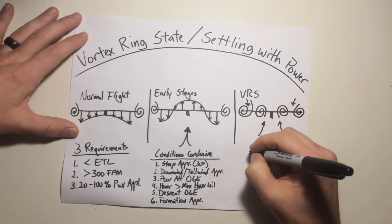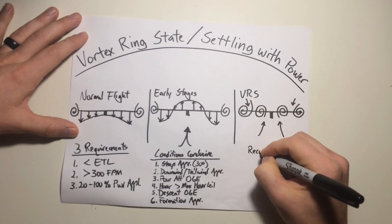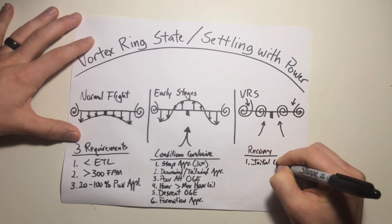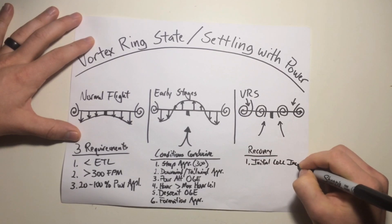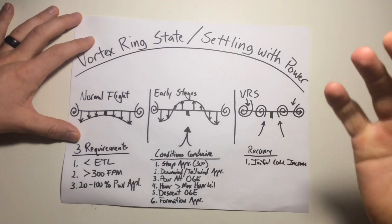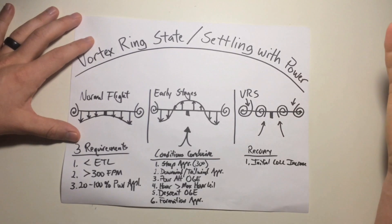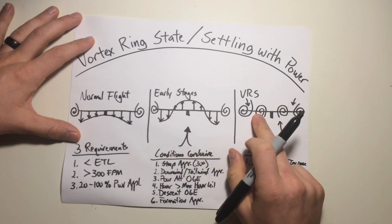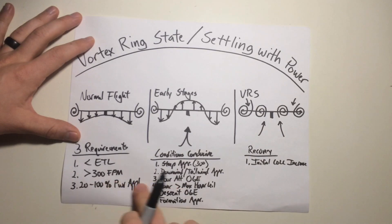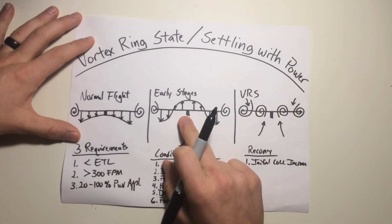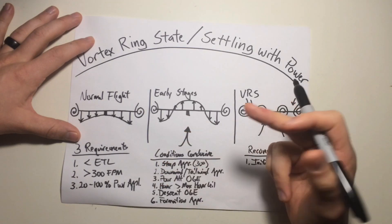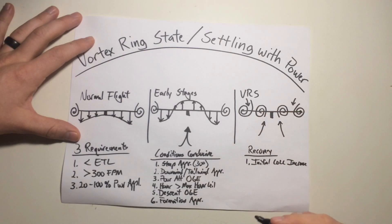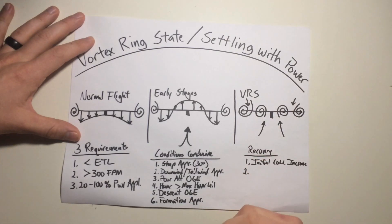So what do you do if you find yourself in a vortex ring state — how do you recover? Number one: an initial collective increase. In the early stages, an initial collective increase could break this cycle before it gets into a full-blown vortex ring state. If you begin to notice suspected early stages, you can make that initial collective increase and break out of it. However, if you increase the collective and it exacerbates your rate of descent, you've potentially already entered the vortex ring state and collective increase is no longer a viable option.